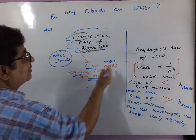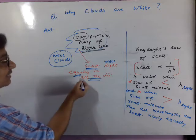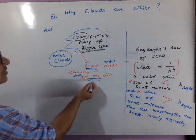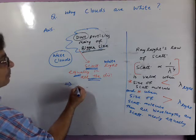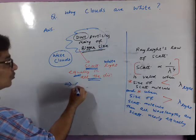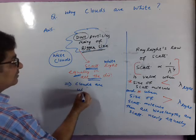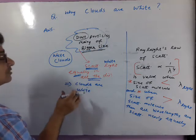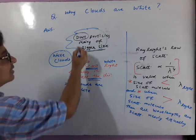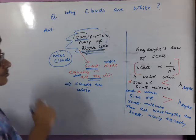You know white light is scattered equally in all the directions. When white light is scattered equally in all the directions, it means white color will be visible. So, clouds are white. Means, koonse cloud white hongi? Jinkai andar dust particles bade size ke hote hai. Aisa kiyo?